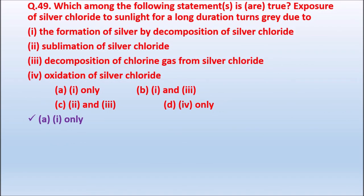Question 49: Which among the following statements is true? Exposure of silver chloride to sunlight for a long duration turns gray due to — formation of silver by decomposition of silver chloride; sublimation of silver chloride; decomposition of chlorine gas; or oxidation of silver chloride. The correct answer is: exposure to sunlight causes decomposition of silver chloride to form silver, turning it gray.